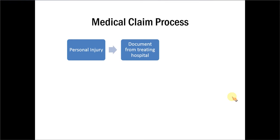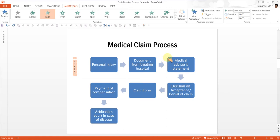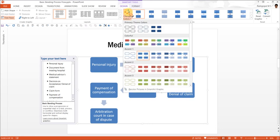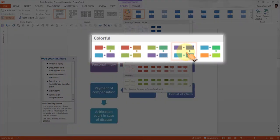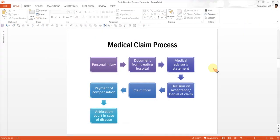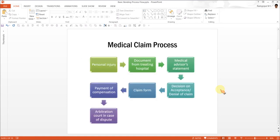I click and talk about the first step, which is personal injury, then click the next step wherein the person gets the document from the treating hospital, and so on. This is the right way to present a lengthy process. We can also beautify this diagram by going to design, change colors, and choose something more colorful, and choose an interesting effect. Using SmartArt, you are able to convert something boring into something interesting.